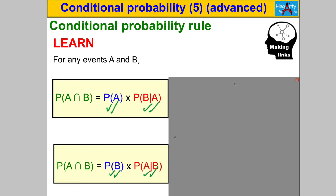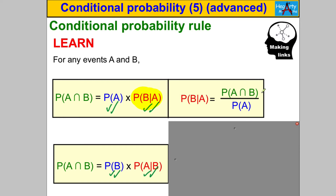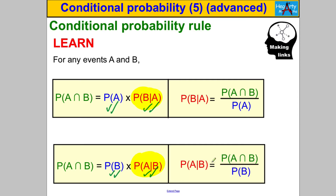Sometimes we want to rearrange these formulas. Dividing both sides by P(A) gives P(B|A) = P(A∩B) / P(A). Dividing both sides by P(B) gives P(A|B) = P(A∩B) / P(B). Students find these easier to remember: the probability of A∩B is always on top, and the conditioning event's probability goes on the bottom.